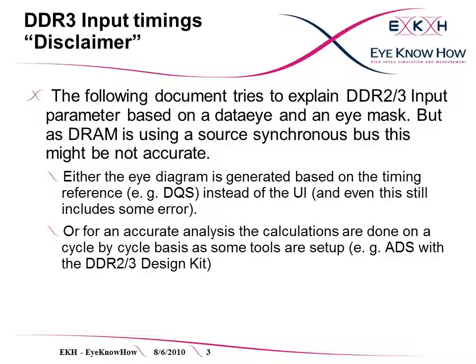The second and accurate option is to do the calculation on a cycle-by-cycle basis. Quite some effort would be required to implement this, but tool vendors have taken this effort already. For example, Ageland ADS does this in the DDR2/DDR3 design kit.